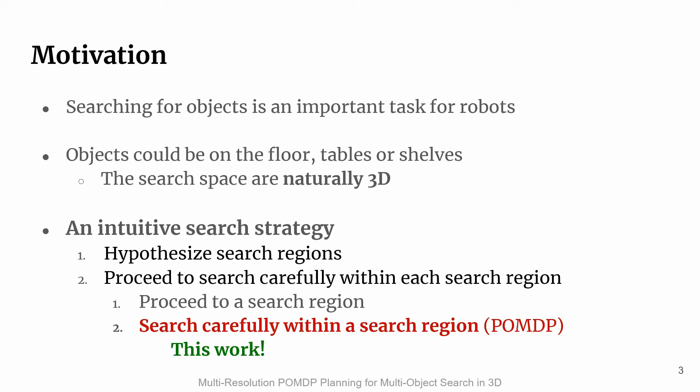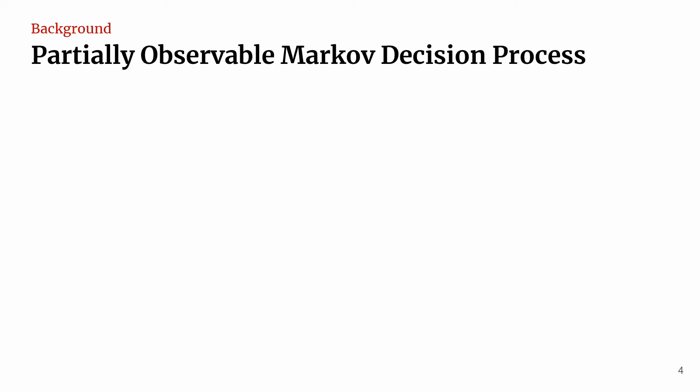This problem can be naturally modeled as a POMDP, which is the focus of this work. We first briefly review some background on POMDPs and object-oriented POMDPs. POMDP stands for Partially Observable Markov Decision Process, and it is a principled framework for decision-making under uncertainty and partial observability. This is especially suitable for object search because it can model realistic aspects such as noisy detectors and unknown target locations.